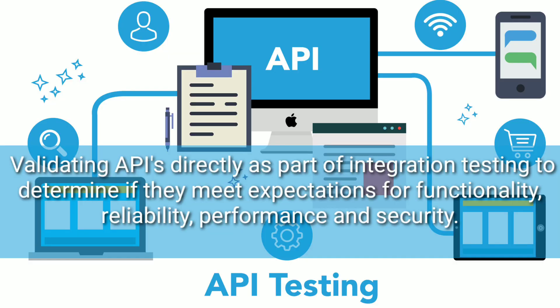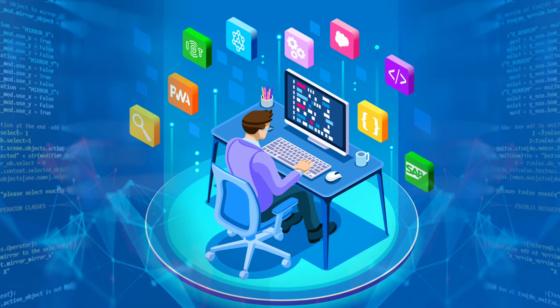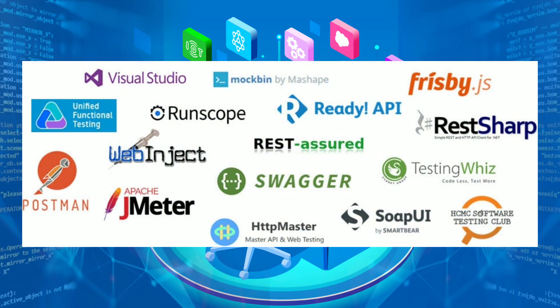API testing is a type of software testing that involves validating APIs directly as part of integration testing to determine if they meet expectations for functionality, reliability, performance, and security. Today, there are a lot of API testing tools available in the market. Postman and SoapUI are some of the commonly used free tools which you can try.